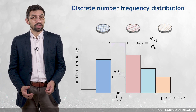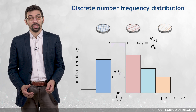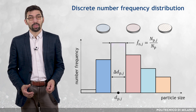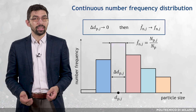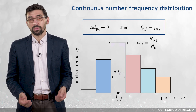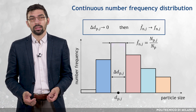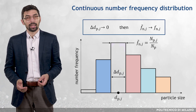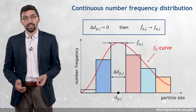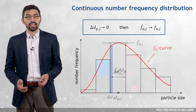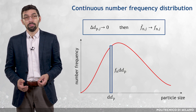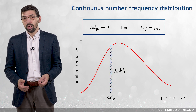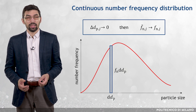Therefore, the discrete number frequency distribution is usually expressed with the particle size on the horizontal axis. Going to the limit of ΔdPj to zero, the continuous number frequency distribution can be obtained. The relative number of particles f̃_Nj tends to f_n, so that f_n times d(dP) is the probability that an individual particle has a size between dP minus d(dP)/2 and dP plus d(dP)/2.